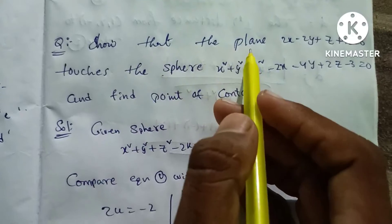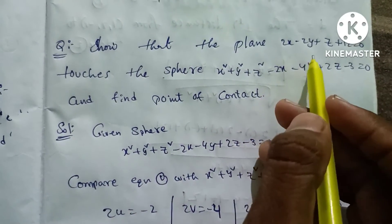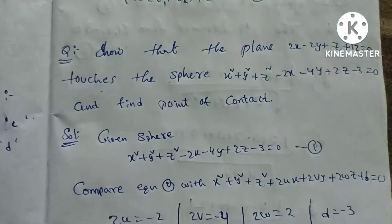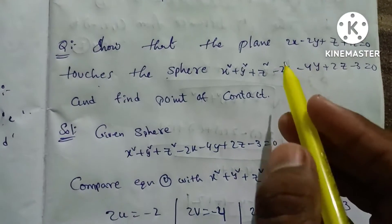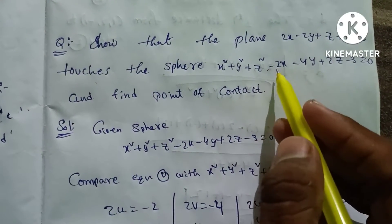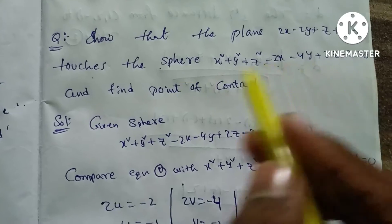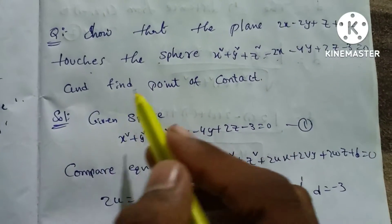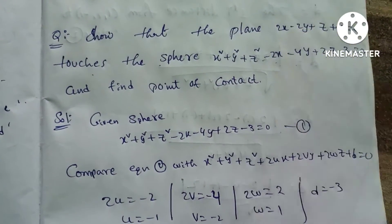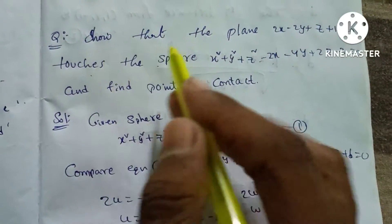Now we will see the problem. Show that the plane 2x minus 2y plus z plus 12 equal to 0 touches the sphere x squared plus y squared plus z squared minus 2x minus 4y plus 2z minus 3 equal to 0, and find the point of contact.